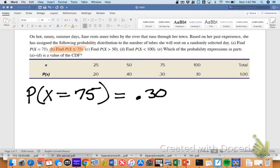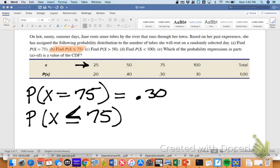Part b is asking us to find the probability that she will sell or that X will be less than or equal to 75. So the probability that she's going to sell either exactly 75 or less than 75. So 25 is less than, so we need to include that one, 50 of course is less than 75, and 75 is exactly equal to 75, so we're going to add those three probabilities together.